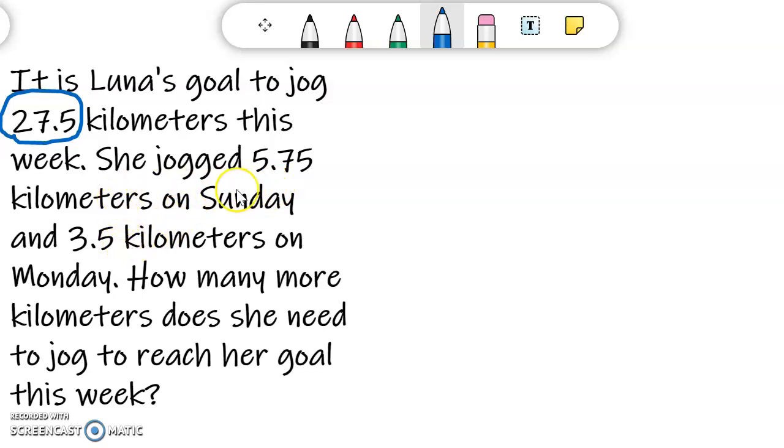In the middle, she jogged 5 and 75 hundredths kilometers on Sunday and 3 and 5 tenths kilometers on Monday. That's the middle. How many more kilometers does she need to jog to reach her goal this week? So that is the end. The question is always my end. And I see that I have the key words here, how many more? That signifies that I should subtract. But I really want to know how many more does she need to jog to reach this goal of 27 and 5 tenths.